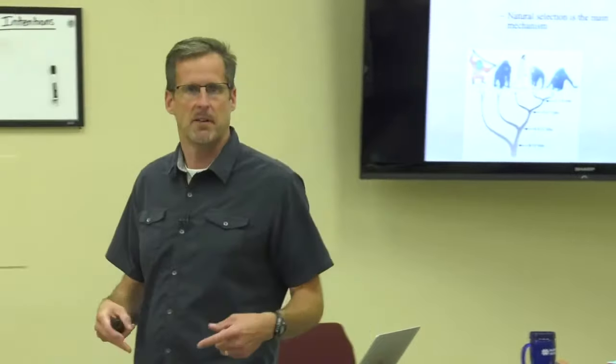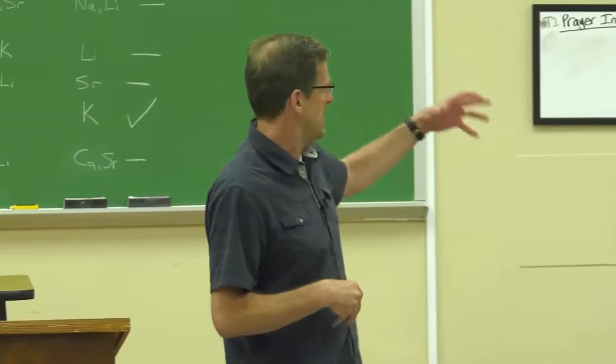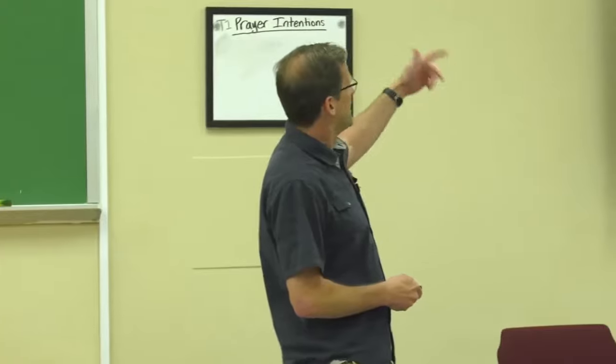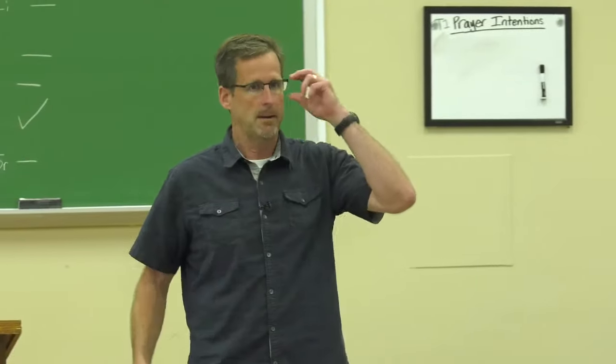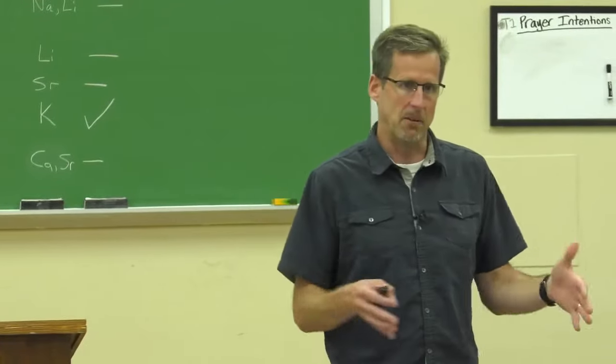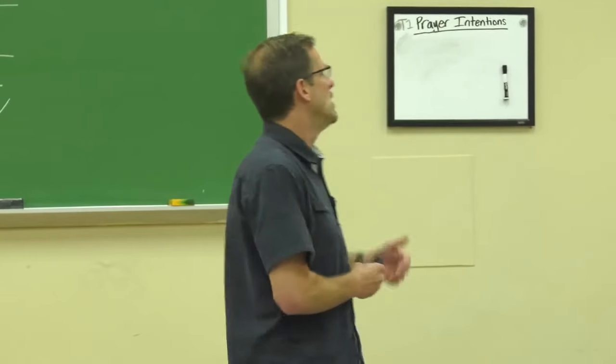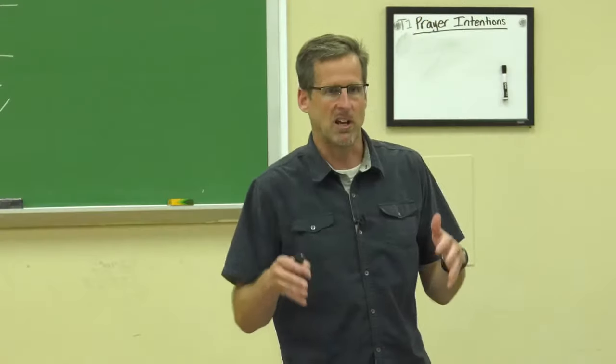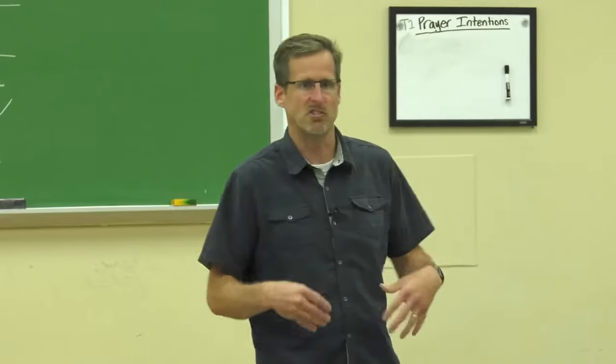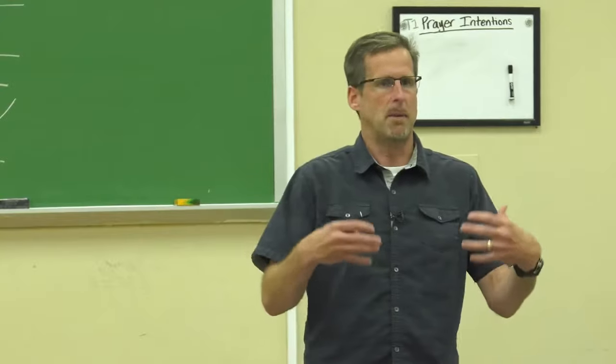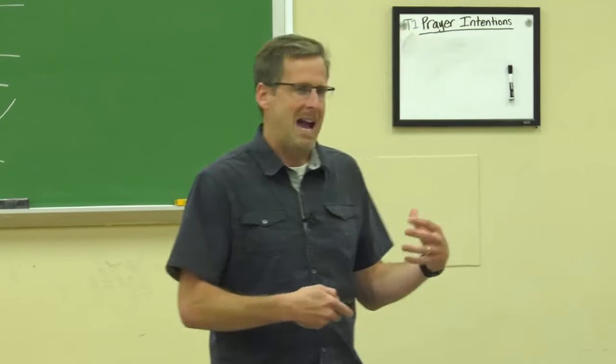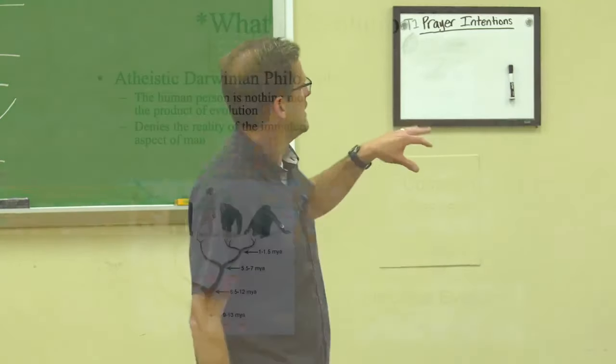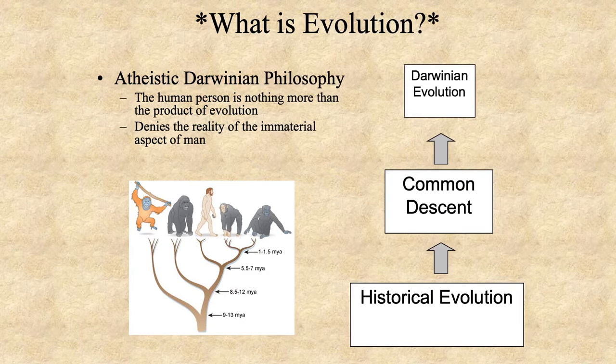All three of these are scientific theories. They're making scientific claims about the material way that the human body evolved and how it's connected to other organisms. What becomes a problem often in literature is when you start to use evolution in a different way. The term evolution becomes problematic in this debate when it's used as a philosophy. You have the atheistic Darwinian philosophy, which says the human person is nothing more than the product of evolution. It's one of those theories that there's nothing more. That denies the reality of the immaterial aspect of man, and it's obviously not a scientific theory.